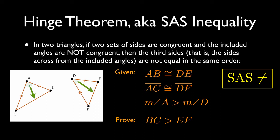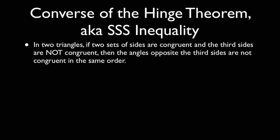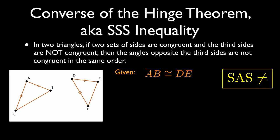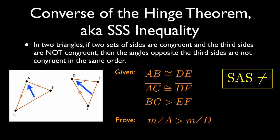That's the Hinge Theorem, and the converse is also true. The converse states: if two sets of sides are congruent and the third pair of sides are not congruent, then the angles opposite those sides are not congruent as well. In other words, if AB is congruent to DE, AC is congruent to DF, but BC is longer than EF, the converse of the Hinge Theorem allows us to prove that angle A is larger in measure than angle D.